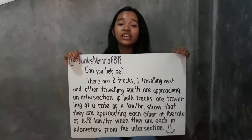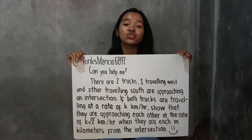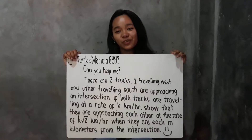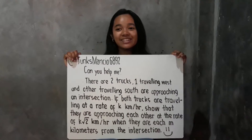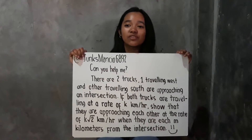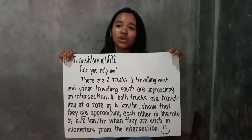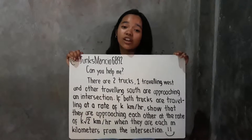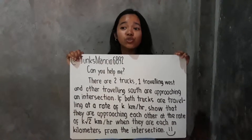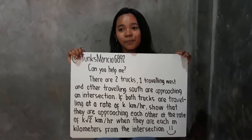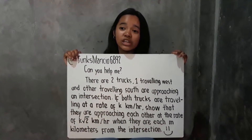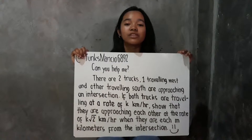Oh! My goodness. The lucky subscriber is @JunksMancho6892. Congratulations! Can you help me? Yes, of course, we can help you. The problem is: there are two trucks, one traveling west and the other traveling south, approaching an intersection. If both trucks are traveling at a rate of K kilometers per hour, show that they are approaching each other at the rate of K square root of 2 kilometers per hour when they are each M kilometers from the intersection.